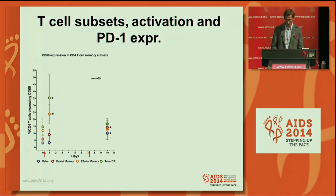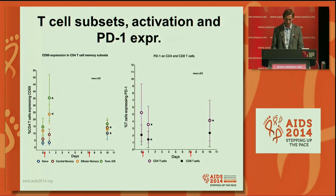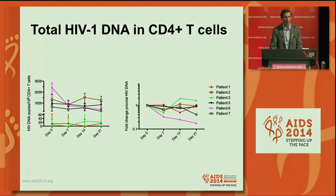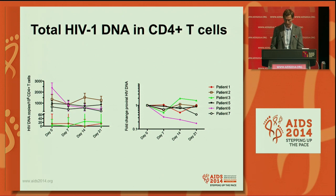We measured PD1 on CD4 and CD8 T cells and found a decrease in PD1 expression in both compartments, which persisted in CD4 cells 10 days after the first infusion. Finally, we measured total HIV DNA as a surrogate marker of the size of the latent reservoir. On a group level, there was no significant change in reservoir size in these six patients. One patient, shown by the magenta line, had an 80% decrease in HIV DNA, but there was no group effect.